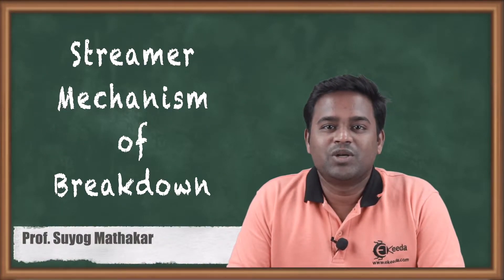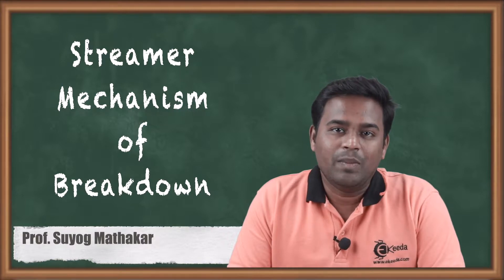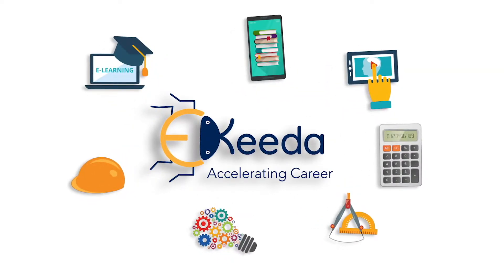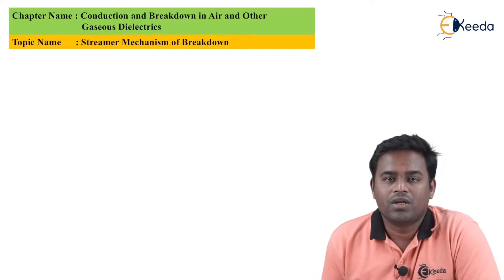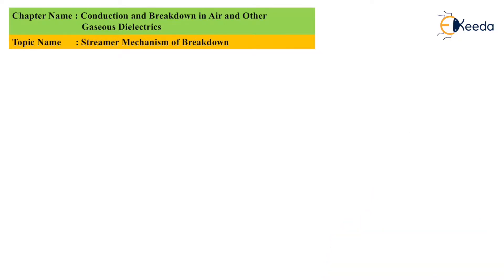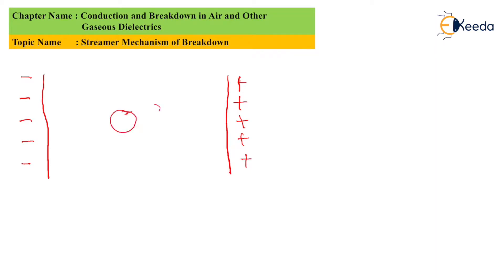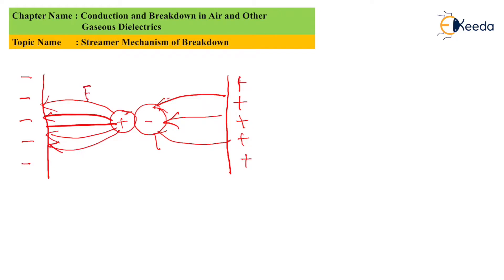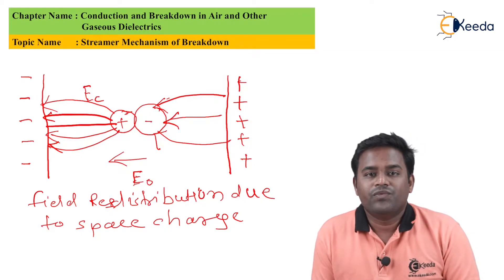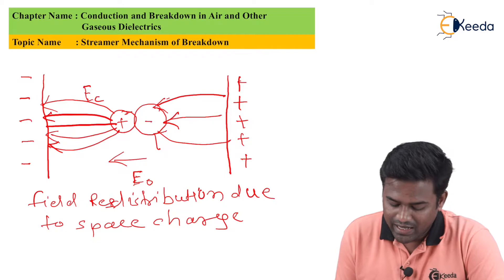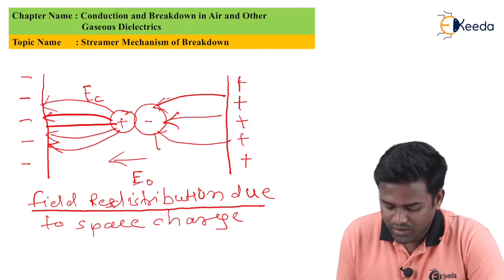Hello friends, today we discuss the topic of streamer mechanism or channel mechanism of breakdown. We will see how streamer mechanism or channel mechanism will occur with the help of one diagram. This diagram represents the field redistribution due to space charges.